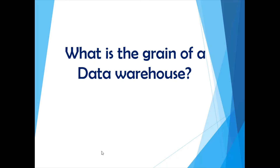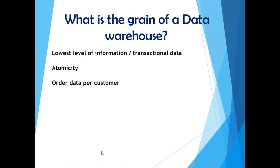The fifth and final question: what is the grain of a data warehouse? So far we have seen concepts like data marts and slowly changing dimensions. The grain of a data warehouse is the lowest level of information or transactional data stored in it, which usually ends up in a fact table. It is also called the atomicity of the data. For example, if you store order data per product per customer in your fact table, that becomes the grain of your data — a combination of unique order, unique product, and customer.